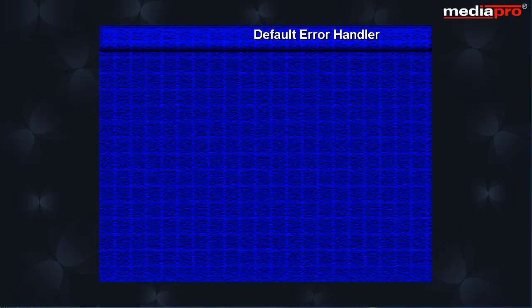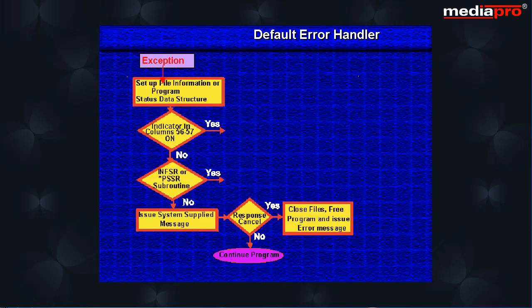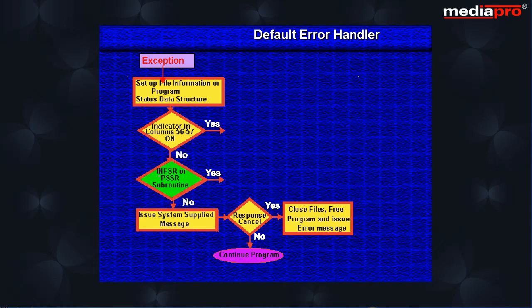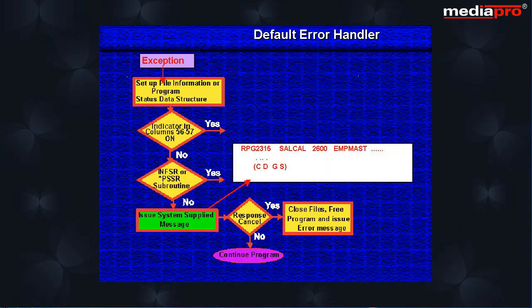Let us begin by looking at the default error handler. Here we have the sequence of steps taken by the system when an exception occurs. First, the system will set up the file information or program status data structure. Next, it will check whether the program has used the indicator method to handle the exception. If not, the system will check whether an error handling subroutine has been specified. If no subroutine has been specified, the default error handler will send a system-supplied message to the user with the option to cancel the program. These messages are not very user-friendly, and hence it is better that we code our programs to take control when an exception occurs.